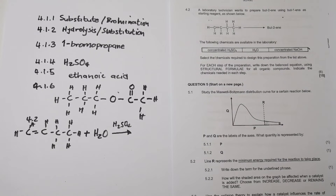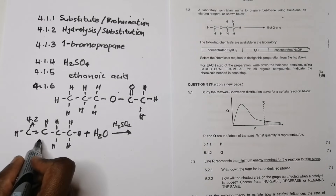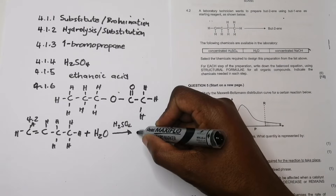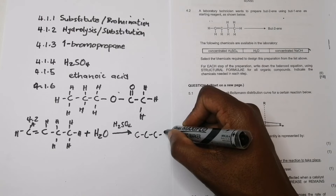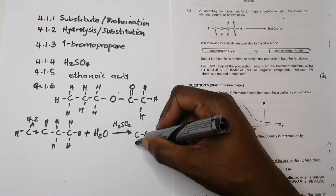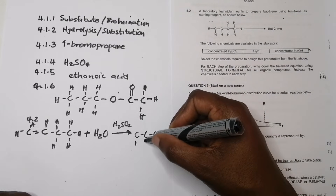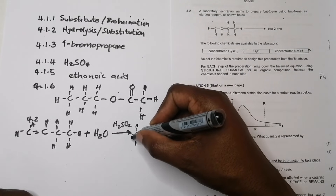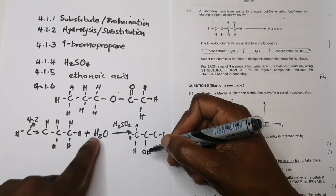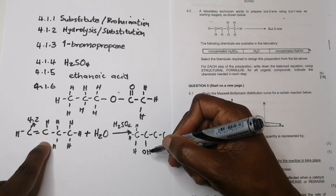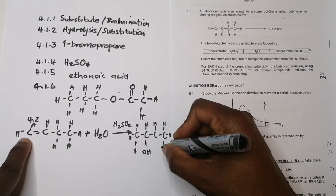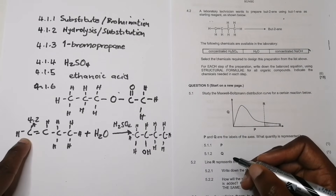Applying Markovnikov's rule for the major product, the hydrogen goes to the carbon with the most hydrogens. In but-1-ene, carbon one has two hydrogens, so the H from water goes to carbon one and the OH goes to carbon two. This gives us butan-2-ol as the major product.